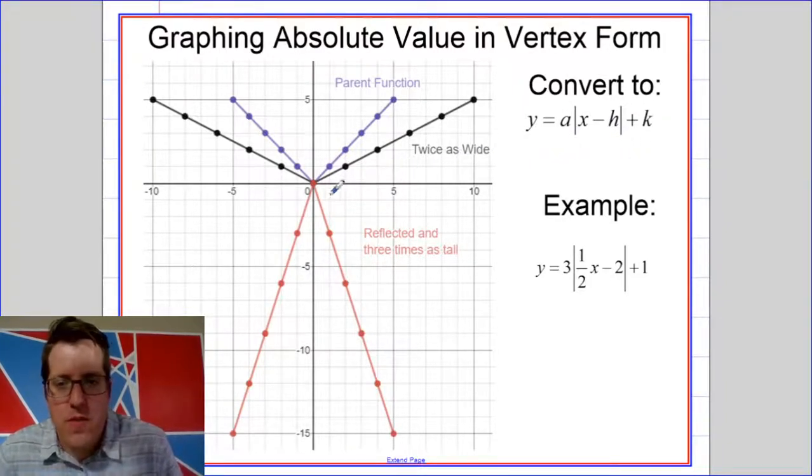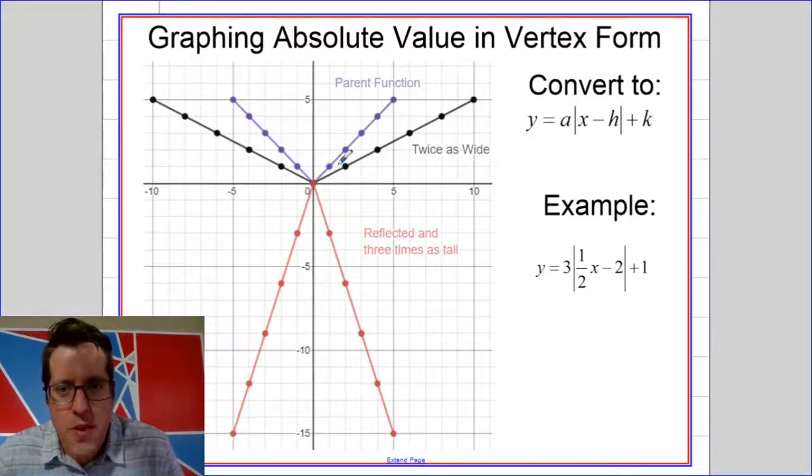Here's the reason for this. What I have here are three graphs. In purple, the parent function of the absolute value. In black, the absolute value stretched to be twice as wide. And in red, the absolute value function reflected and also made three times as tall.